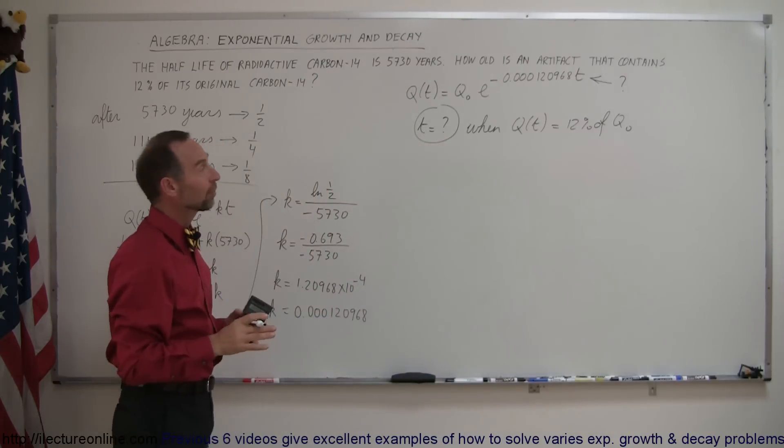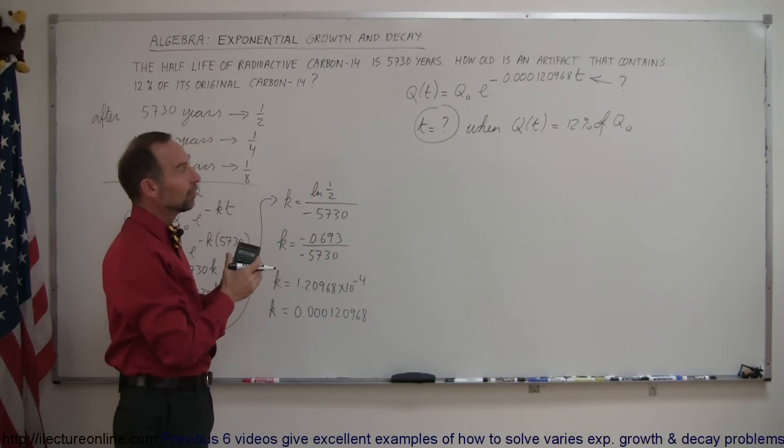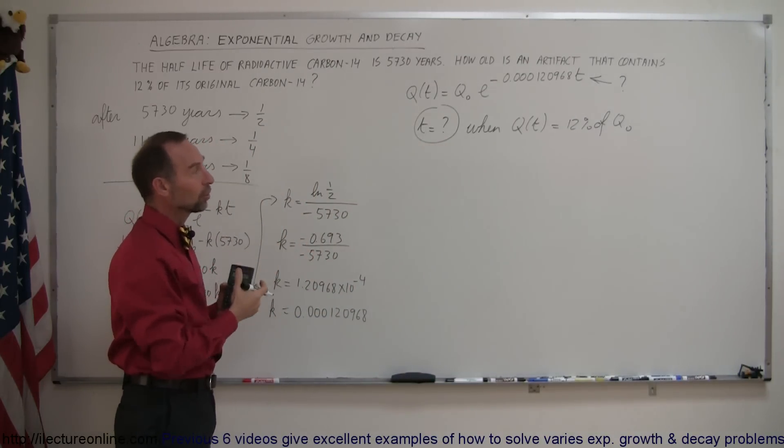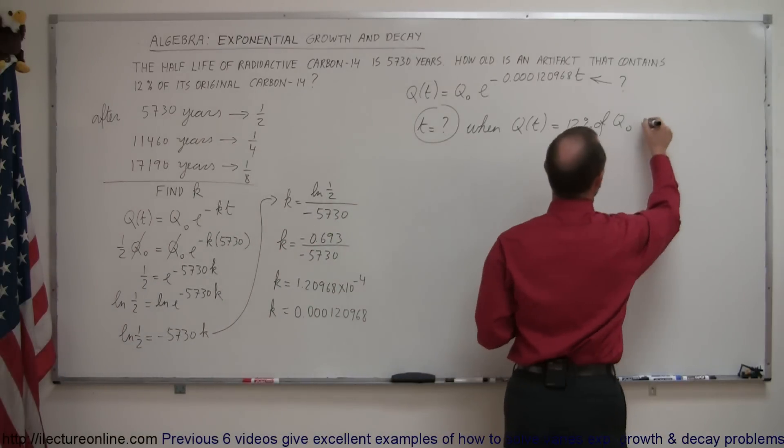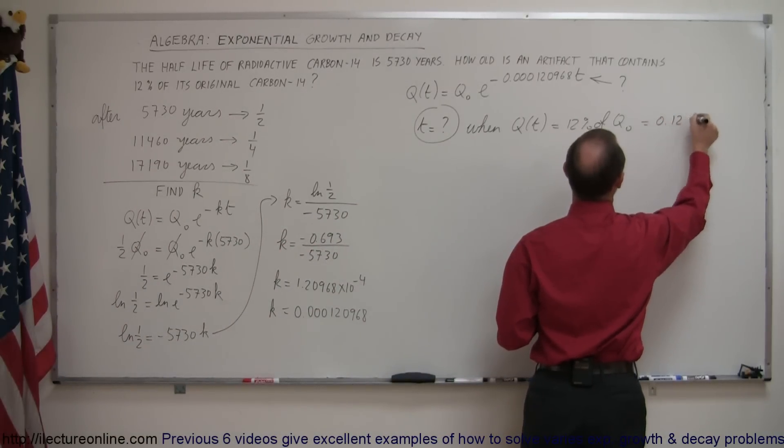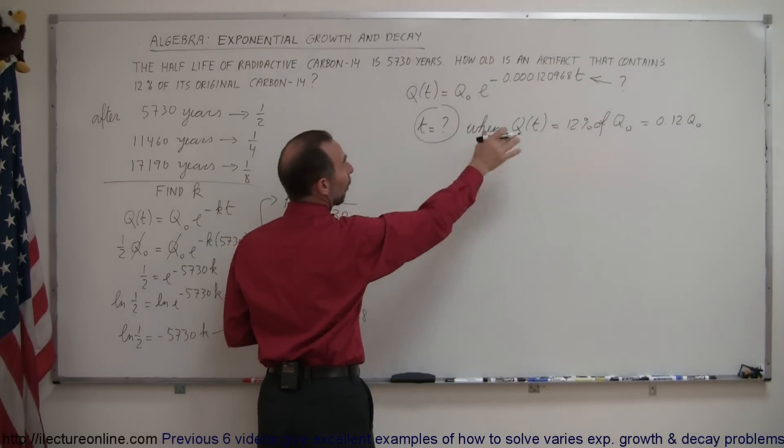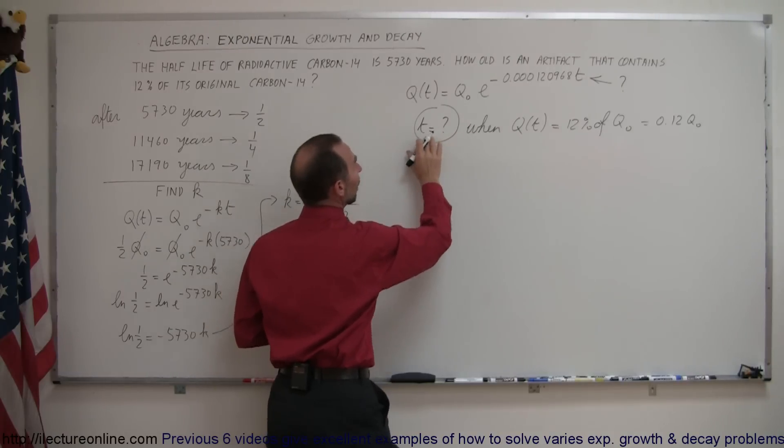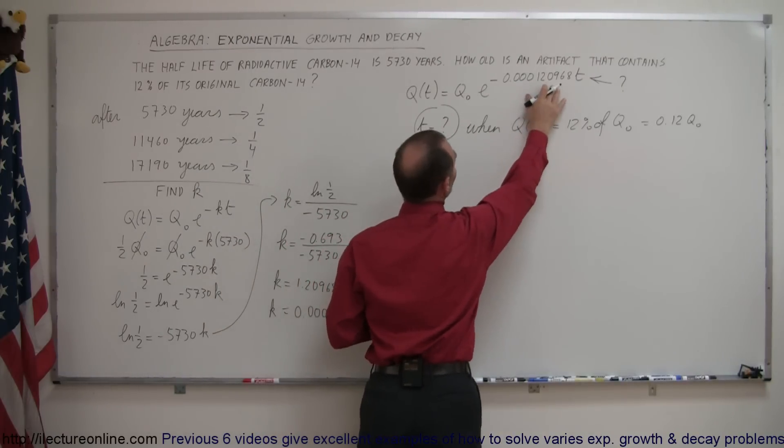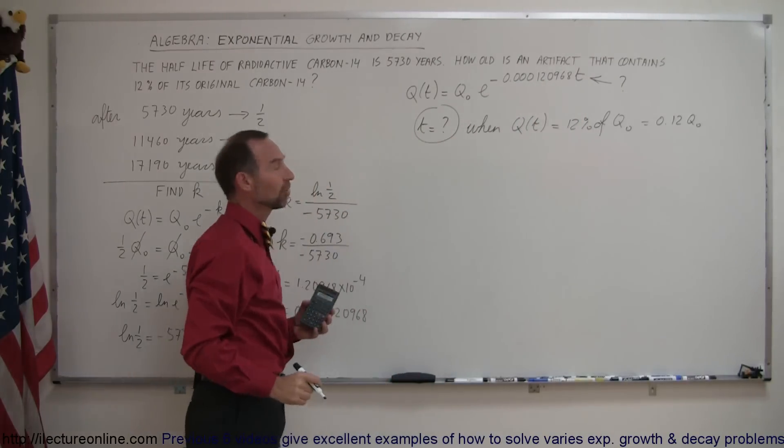So, we're looking for how much time has elapsed when the amount that you end up with is only 12% of what we started with, q sub nought, which, of course, is equal to 0.12 q sub nought. So, what we're going to do is we're going to replace this by 0.12 q sub nought and plug in k, and then solve for time. So, let's do that.